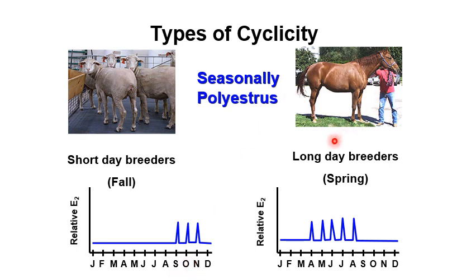Horses are considered long-day breeders because they come into heat when the days are longer — in spring, during April, May, June, July, and August. All of this is under natural light conditions.